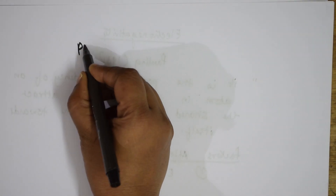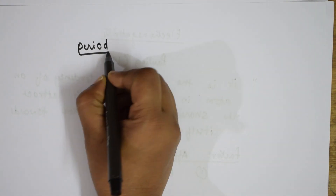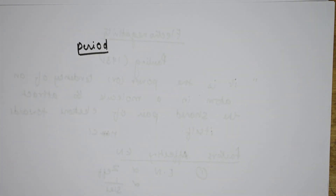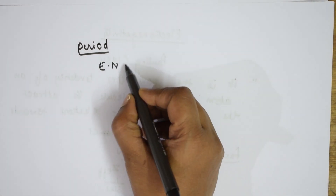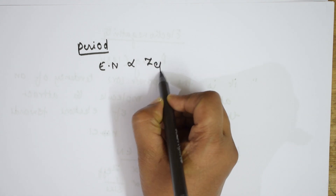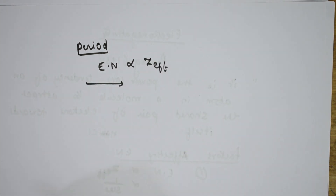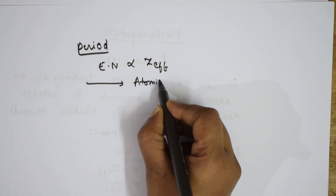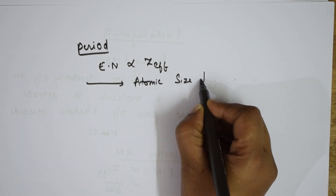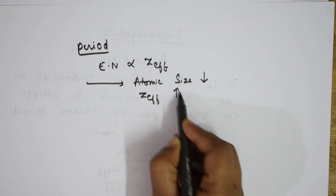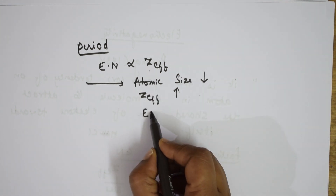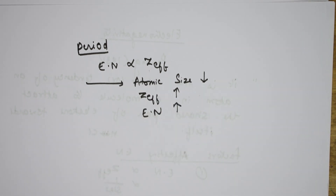Let us see how electronegativity varies in a group and in a period. If I take a period — when we move from left to right, atomic size decreases. When atomic size decreases, Z-effective increases. When Z-effective increases, electronegativity also increases. So electronegativity increases from left to right across a period.